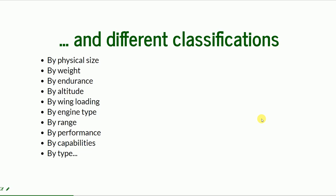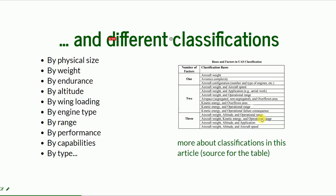Classifications can also combine two or more factors — for example, low altitude with high endurance, or high altitude with low endurance. Here there is an extensive article about UAS classification. You can see that there are classifications that comprise only one factor, two, or even three factors.